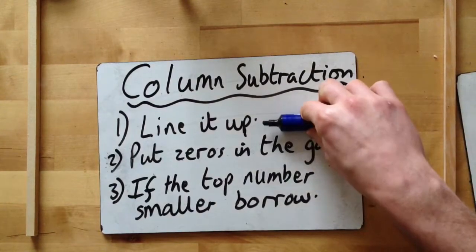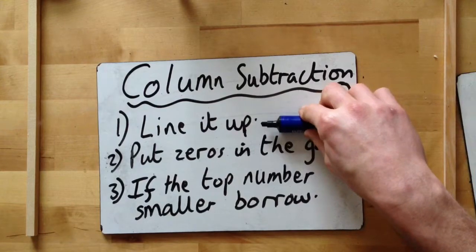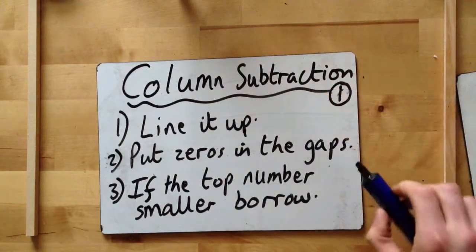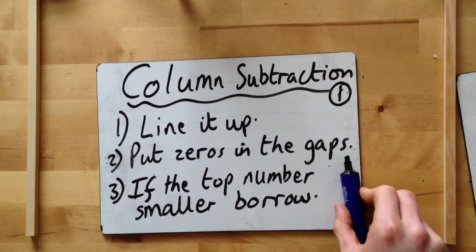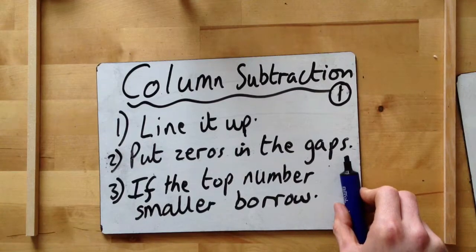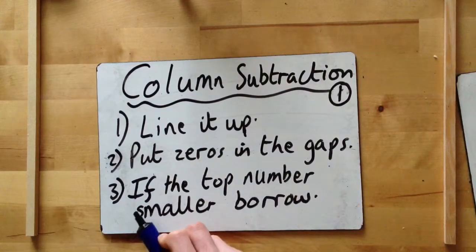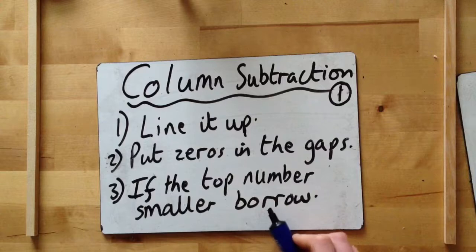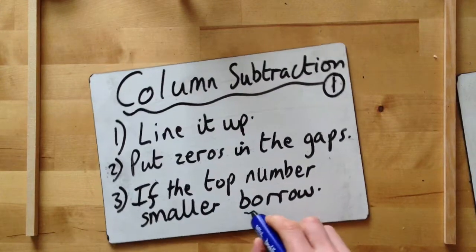First rule: line it up. Talked about this with addition, it's key with subtraction. Second: put zeros in the gaps. If you've got any gaps, you'll see what I mean, put zeros in. And thirdly: if the top number is smaller, borrow. You must, must, must, must, must borrow.